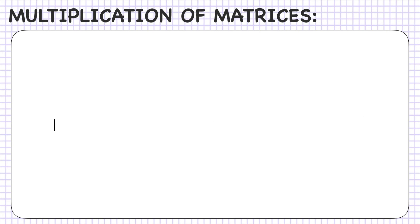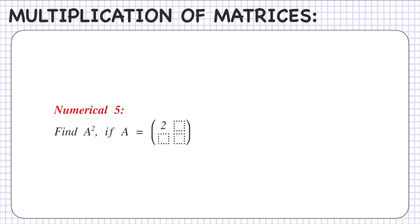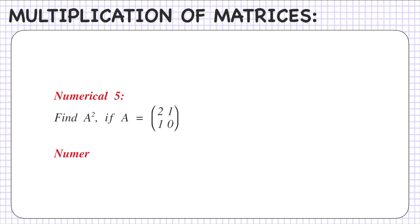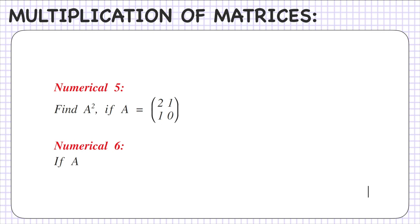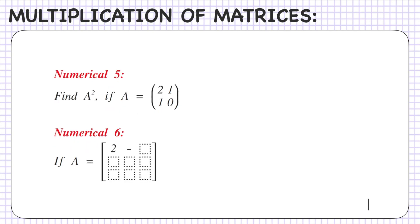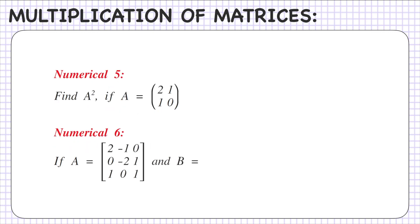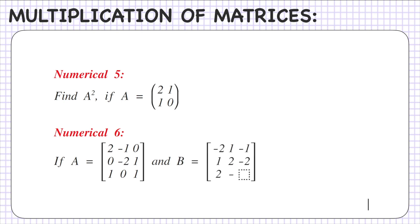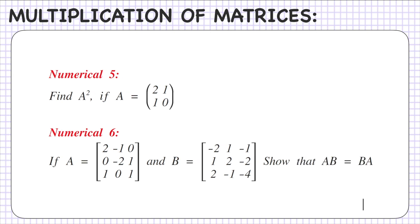Numerical 5: find A² if A equals [2, 1; 1, 0]. Numerical 6: if A equals [2, -1, 0; 0, -2, 1; 1, 0, 1] and B equals [-2, 1, -1; 1, 2, -2; 2, -1, -4], show that AB equals BA.